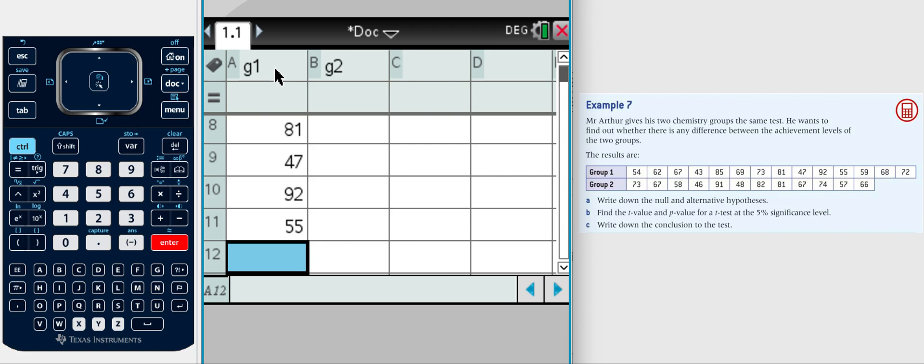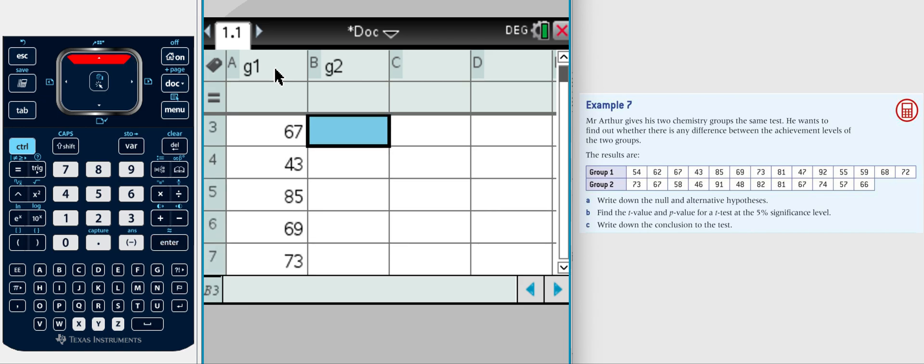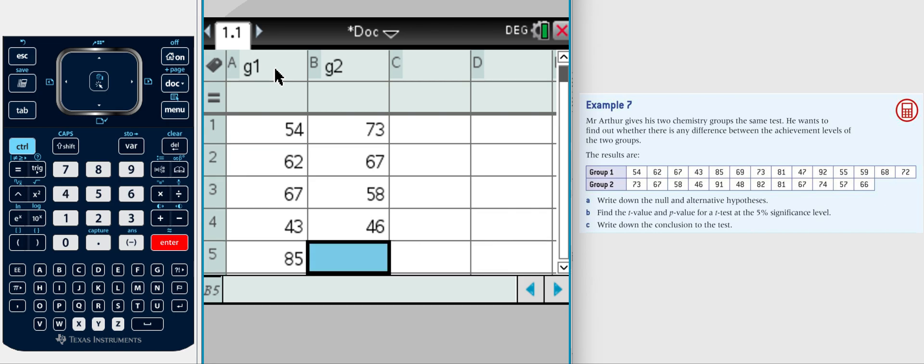I've noticed on the GDC it's been easy to miss some numbers. So I've got my G1 data inputted. G2 data takes time but this is what you're going to have to get used to for an exam. These are probably the exam style questions.